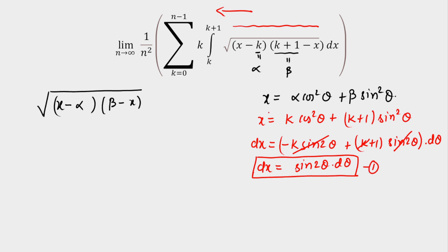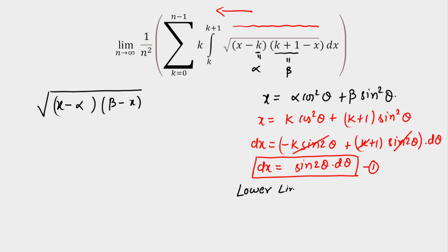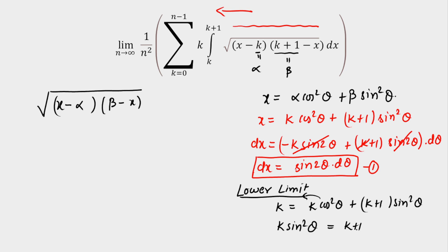Once the substitution is taken in definite integration, we have to change the limits. Starting with the lower limit: when x equals k, we put k = k·cos²θ + (k+1)·sin²θ. Taking k·cos²θ to the other side, we get k·sin²θ = (k+1)·sin²θ, which gives sin²θ = 0, so theta equals 0 for the lower limit.